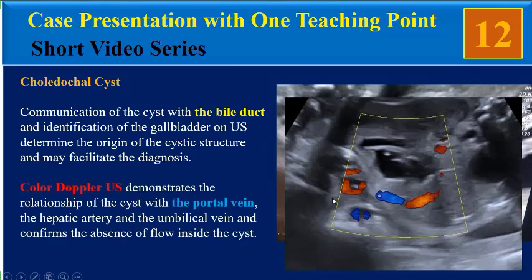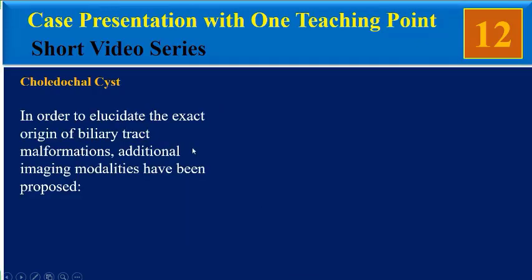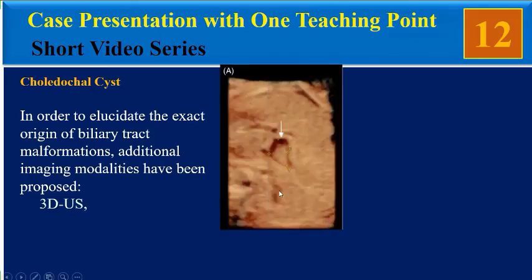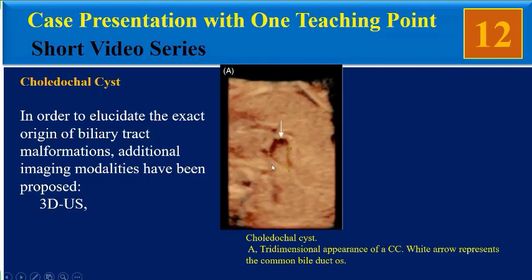Color Doppler ultrasound demonstrates the relationships of the cyst with the portal vein, the hepatic artery, and the umbilical vein, and confirms the absence of flow inside the cyst. Additional imaging modalities have been proposed to elucidate the exact origin of the malformation, such as 3D ultrasound. As we can see, this 3D ultrasound of the fetus shows a choledochal cyst and here we can see the CBD.